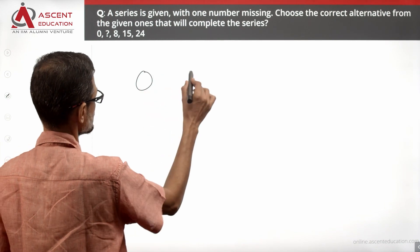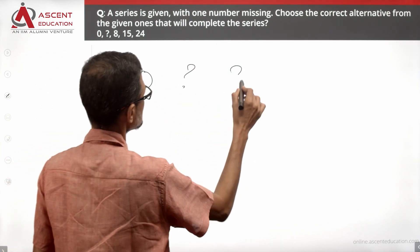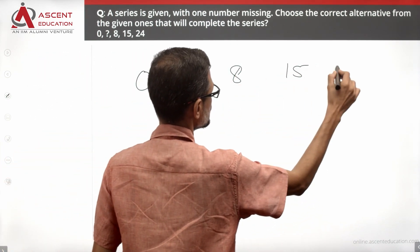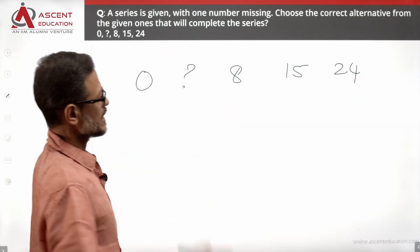The sequence is: the first number is 0, second number is the missing one, then 8, 15, 24.